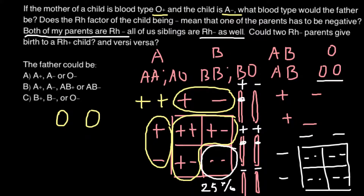The same logic applies to the Rh sign, because as I showed you, two parents who are Rh positive can produce an Rh negative child if both parents are heterozygous. But why do we have to cross out answer A? Because the genotype given for the father in answer A is O phenotype. The genotype would be OO.